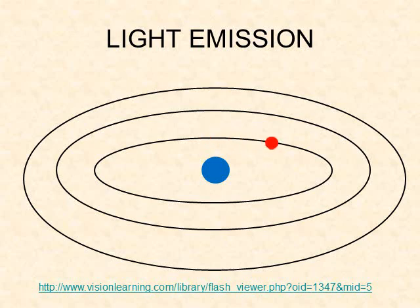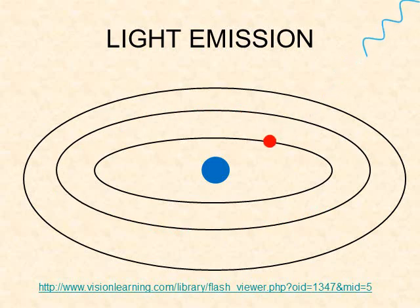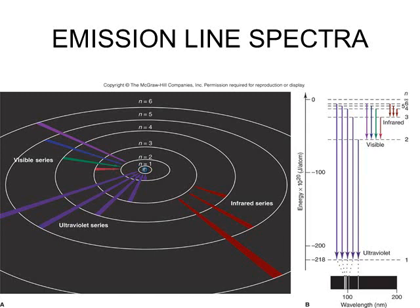The explanation is that electrons absorb heat energy and jump to a higher energy level, but only if the energy is at exactly the right amount. When electrons drop back to the lower energy level, the extra energy is released as light with a wavelength corresponding to the difference in energy between the two levels. Drops from higher levels down to level one correspond to ultraviolet light, drops down to level three involve infrared light, and drops down to level two involve visible light.